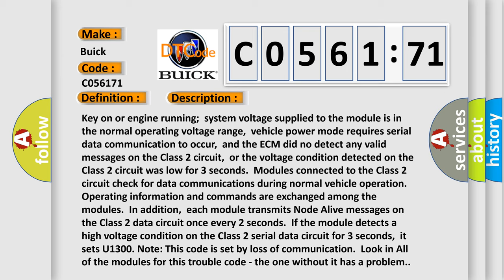Key on or engine running, system voltage supplied to the module is in the normal operating voltage range, vehicle power mode requires serial data communication to occur, and the ECM did not detect any valid messages on the Class II circuit, or the voltage condition detected on the Class II circuit was low for three seconds.